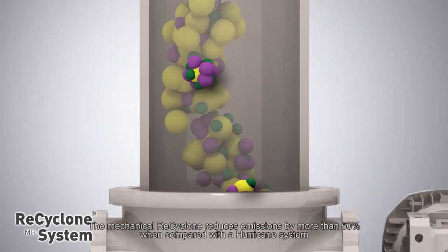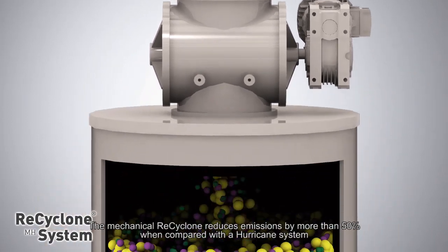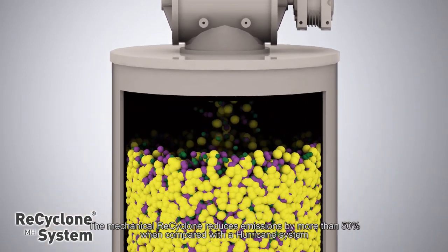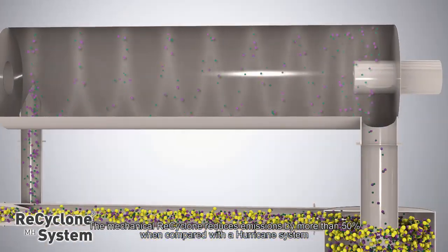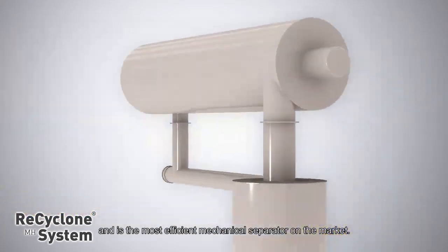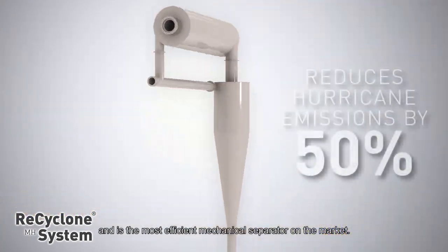The mechanical recyclone reduces emissions by more than 50% when compared with a hurricane system and is the most efficient mechanical separator on the market.